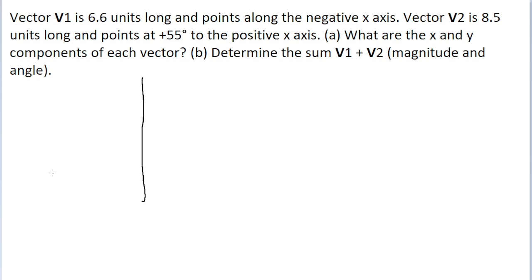Here are our coordinate axes. The first vector we're told about, vector 1, has 6.6 units and points along the negative x-axis. I'm going to draw the negative x-axis as pointing to the left. So our first vector, v1, is going to look something like this, pointing to the left. That's v sub 1.